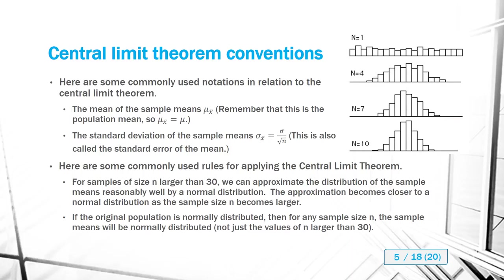There are some conventions and commonly used notations in relation to the central limit theorem. The mean of the sample means is represented as mu sub X-bar. Because the mean is an unbiased estimator, the mean of the sample means approaches the mean of the population, so the two are actually the same. The standard deviation of the sample means is represented as sigma sub X-bar, which equals the standard deviation divided by the square root of the sample size. This is also called the standard error of the mean.